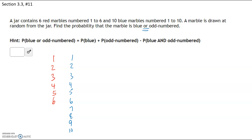The keyword 'or' triggers the addition formula: P(blue or odd) = P(blue) + P(odd) minus P(blue and odd), because some marbles get double counted. We always subtract off the intersection — the marbles that are both blue and odd. How many blue marbles do we have? We have 10 blue marbles out of a total of 16, so the probability of selecting a blue marble is 10 out of 16.